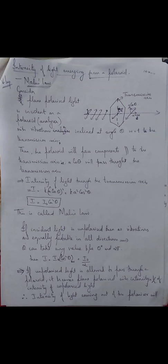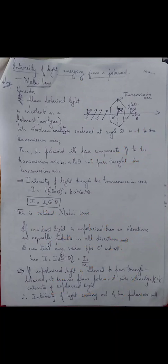Unpolarized light means light having vibrations in all directions. When it is allowed to pass through a polarizer, plane polarized light comes out. To find the intensity of this emergent light, we use I = I₀ cos²θ and take the average of cos²θ from 0 to 2π, because the incident light has vibrations in all directions. The average of cos²θ from 0 to 2π is one half. So I = I₀/2 — the intensity of transmitted light when unpolarized light falls on a polarizer is reduced to half of the incident light.